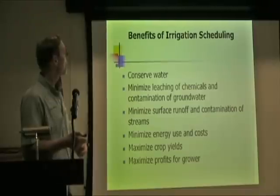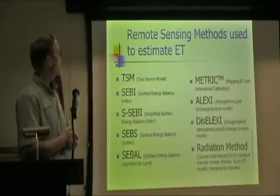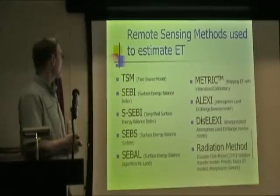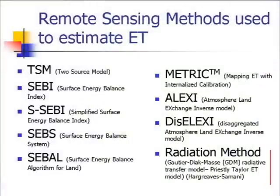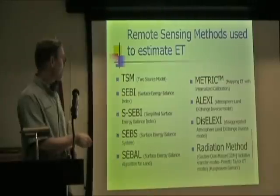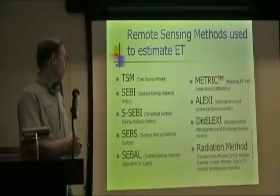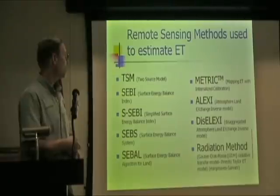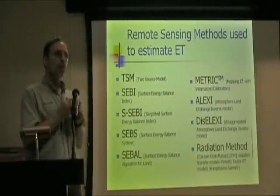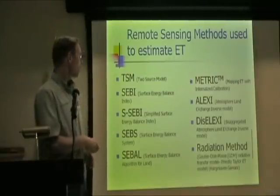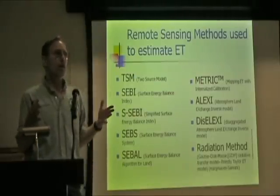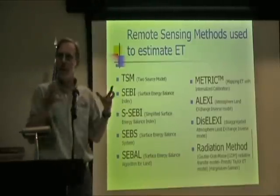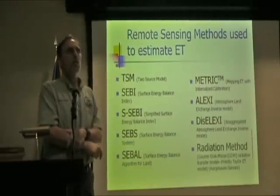There are quite a few remote sensing methods for estimating ET, relying on different sensors aboard polar-orbiting or geostationary satellites, each with unique complexities, advantages, and disadvantages. In this talk we focus on the radiation method, which my co-author is one of the originators of. The advantage of this method is that you can get very high resolution ET — right down to field scale. The method we're looking at in Puerto Rico initially is at one kilometer resolution, so individual fields may not always fit neatly within a satellite pixel, meaning you often end up with mixed vegetation types.